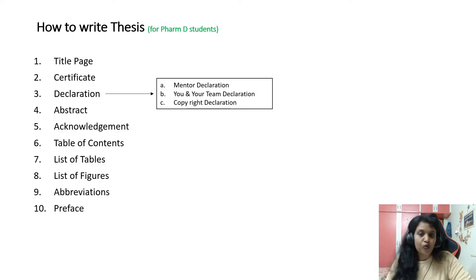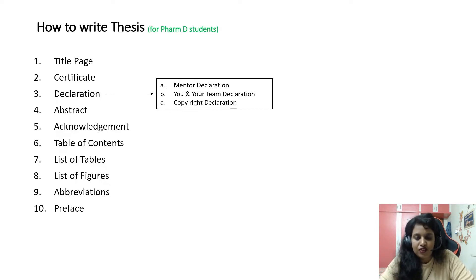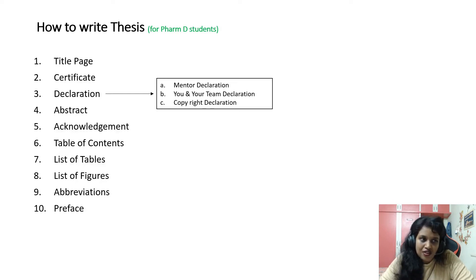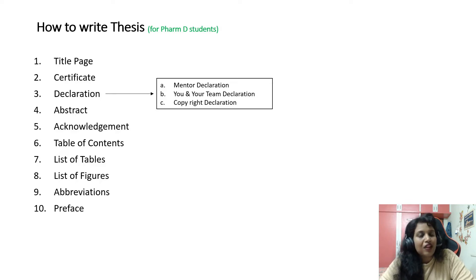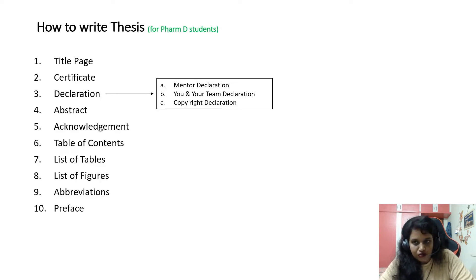After the abstract, you will put the acknowledgement. It includes all the stakeholders who helped you in making your thesis — for example, your guide, other teachers, the librarian, and anyone who gave you permission or helped you complete your work. You are essentially giving gratitude to everyone who contributed.